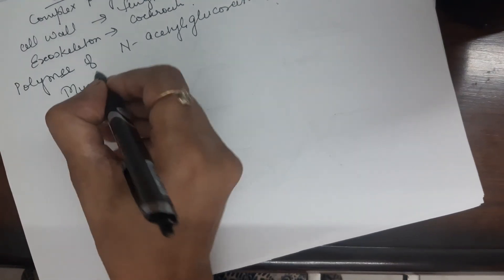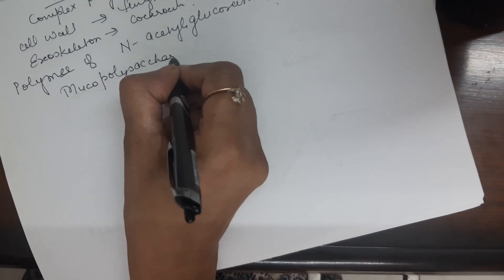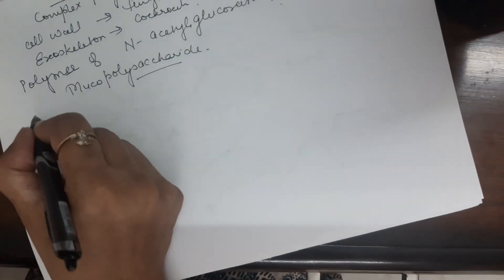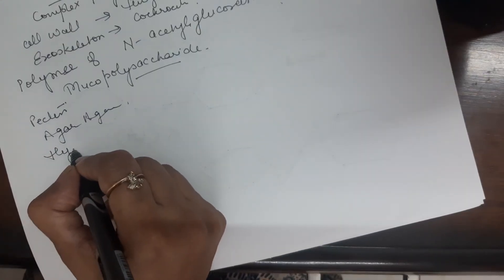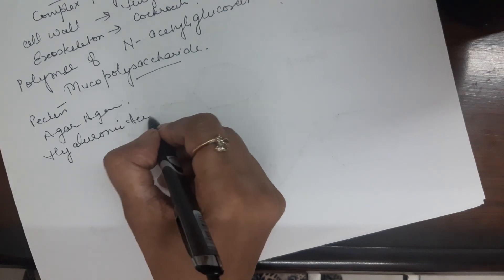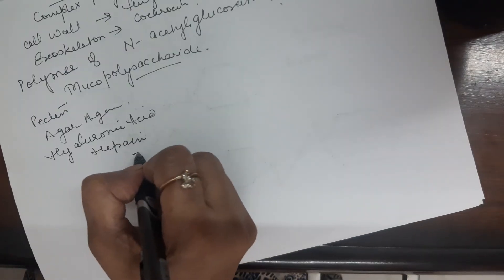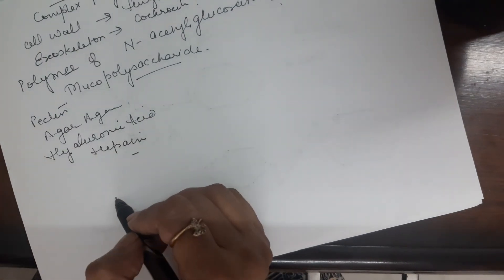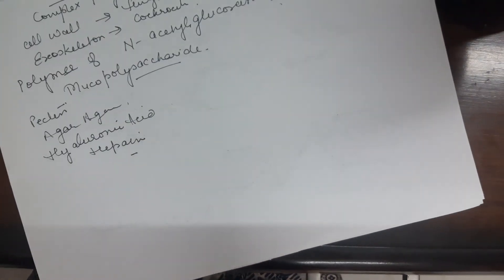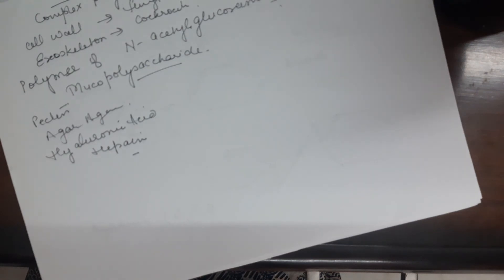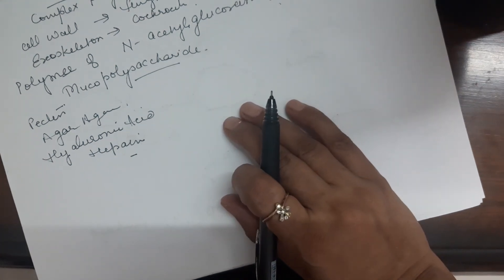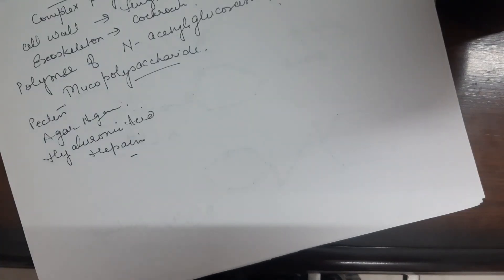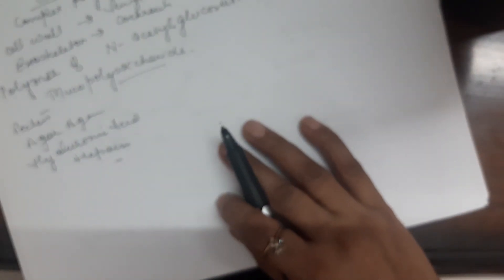Another one is mucopolysaccharide. There are many types of mucopolysaccharide like Pectin, Agar-Agar, Hyaluronic Acid, Heparin. These are different types of mucopolysaccharide. Many of these act as lubricant also. Again, these are also formed by condensation reaction between the galactose or galactouronic acid or arabinose with certain amino acids to form the mucopolysaccharides.